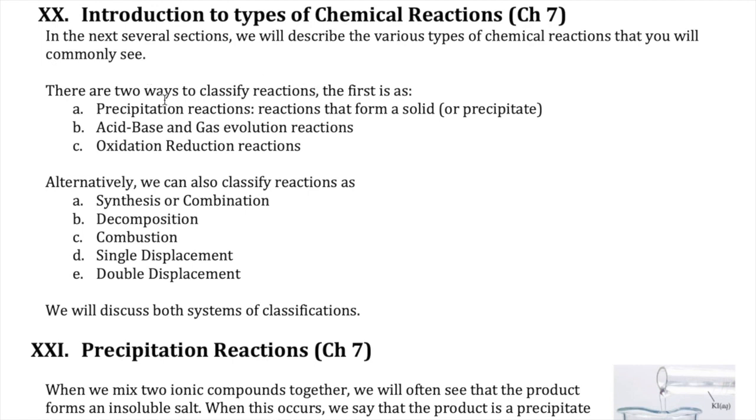One method splits reactions into three types: precipitation reactions, acid-base reactions, and oxidation-reduction reactions. The second method groups the reactions into the five types listed here. We will discuss both of these methods in the next sections.